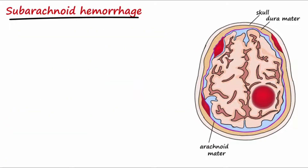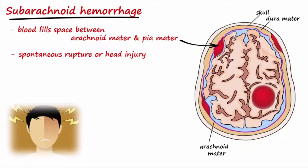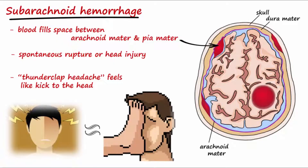With subarachnoid hemorrhages, blood collects in the subarachnoid space, which is between the arachnoid and pia mater. This is the same space where cerebrospinal fluid is found. The bleeding may occur by spontaneous rupture or as a result of head injury. The most common symptom is called thunderclap headache, which develops immediately within seconds and feels like a kick to the head.